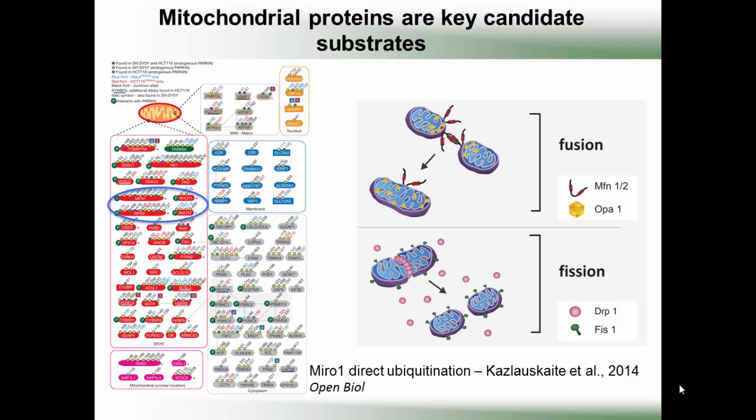One of the most fascinating aspects of Parkin, to me, is the fact that it seems to have so many putative substrates assigned to it. A recent high-profile screen from Wade Harper's lab yielded some 450 proteins that become ubiquitinated in a Parkin-dependent manner. These targets are found in multiple cellular locations and appear to be targeted at multiple sites. This extensive repertoire is unheard of in ubiquitin biology — there are no other ligases that have this extensive list of substrates.